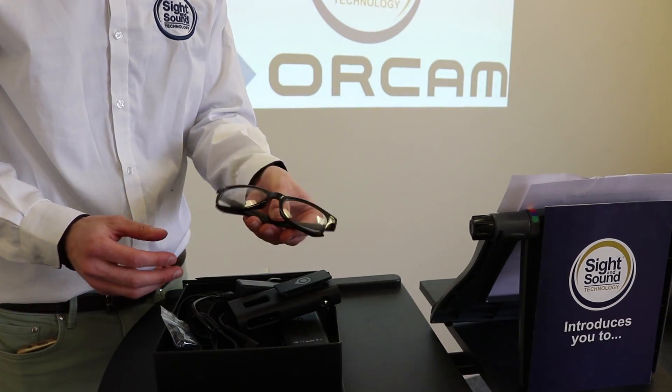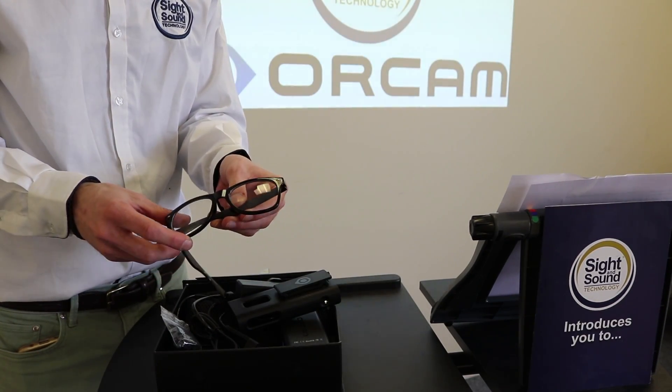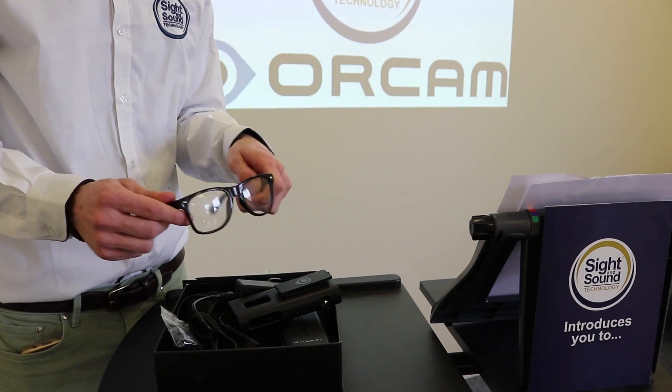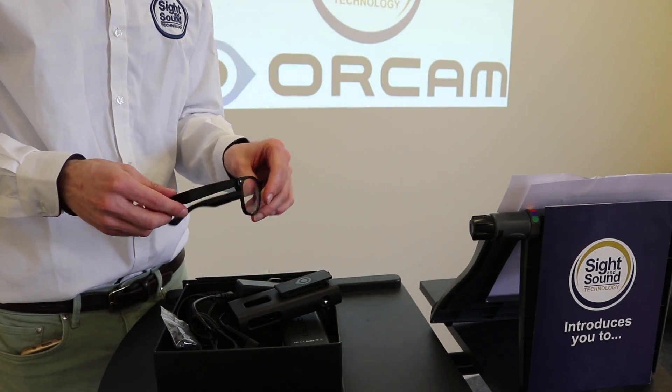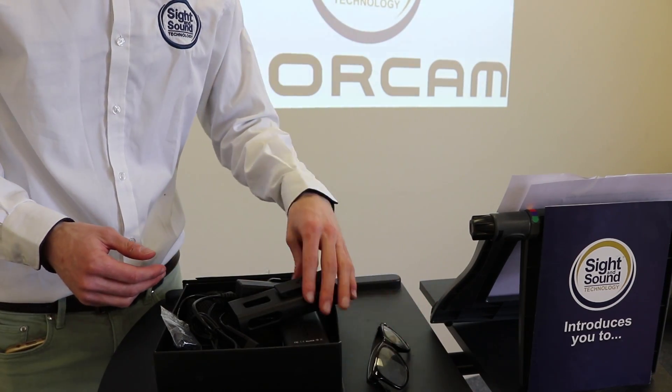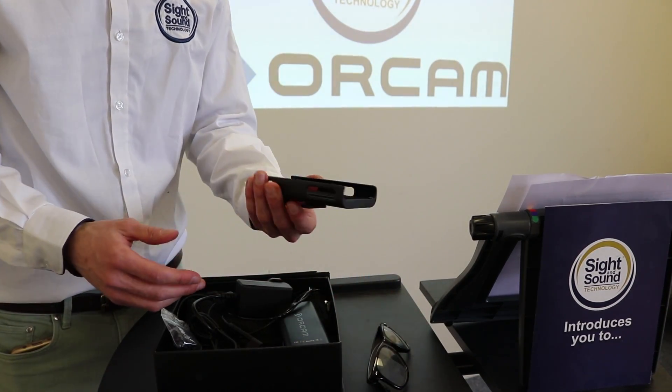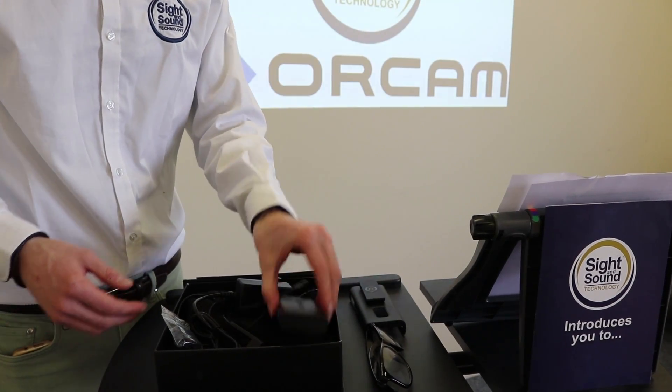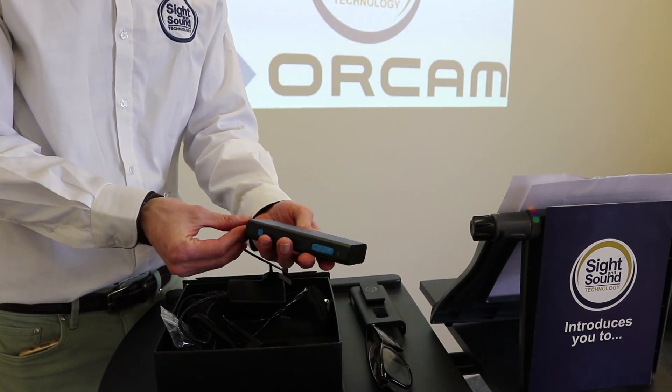So we've got a pair of glasses, these are just generic glasses, you don't have to use these. We include them anyway just in case you don't usually wear glasses. You do of course need something to mount the camera onto, that's why we include them. But yes you can use your own glasses, I'll show you how to mount them in a second. We have a protective case so you can clip it onto your belt. This is the base unit or the control panel.